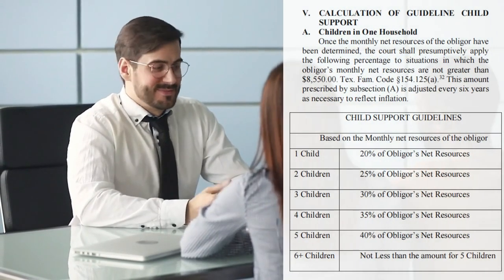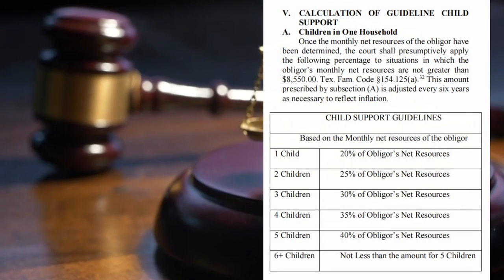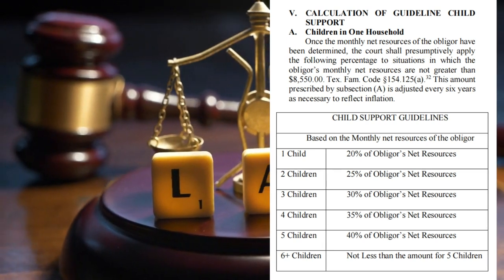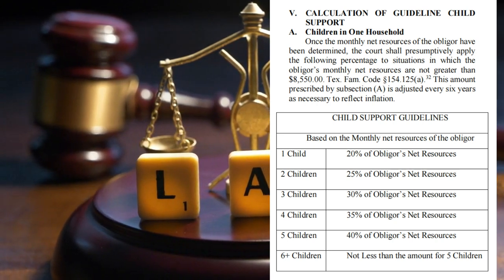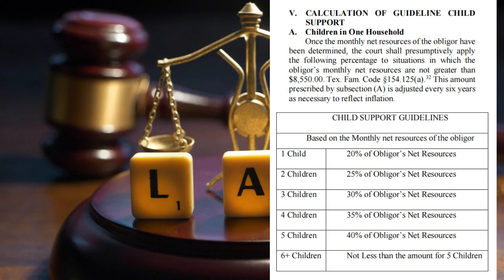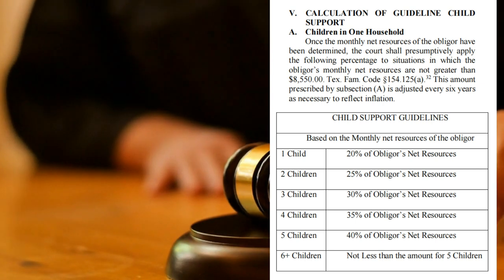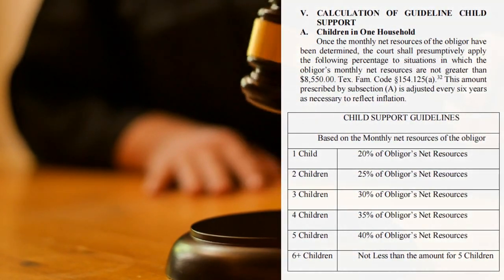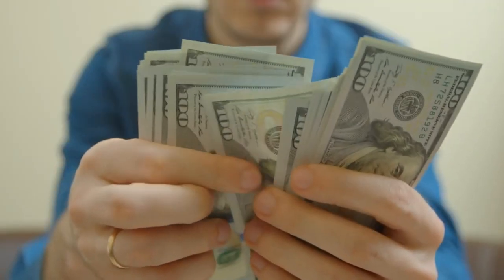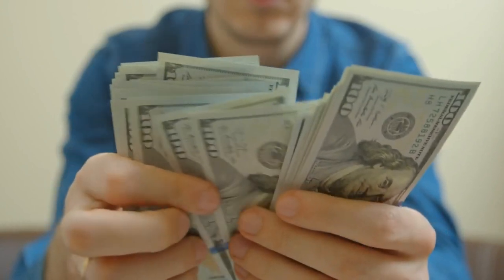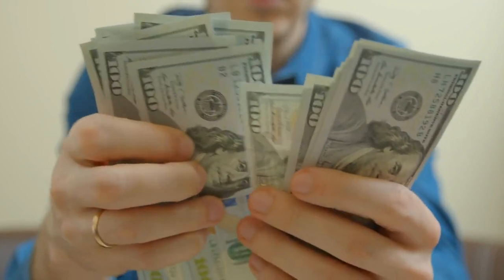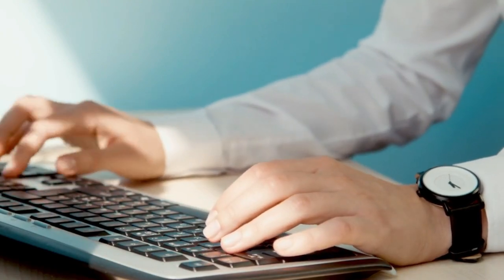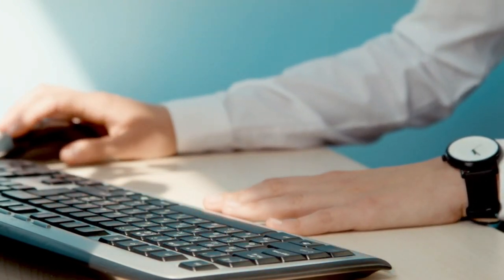For the calculation of guideline child support, the Attorney General has a chart that gives you a percentage based on how many children are before the court. The maximum net resources for guideline child support is, at the time of this video, $9,200 per month. For one child, you multiply net resources by 20 percent, so if you are netting $9,200 a month your maximum guideline child support would be $1,840 per month.